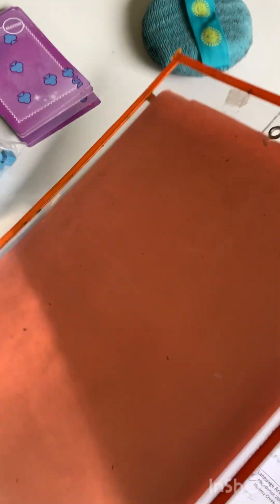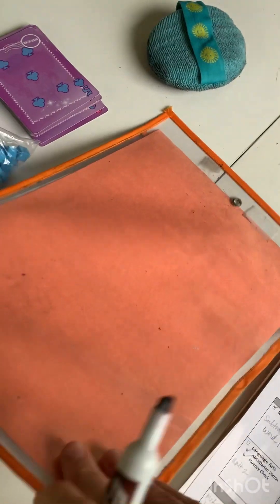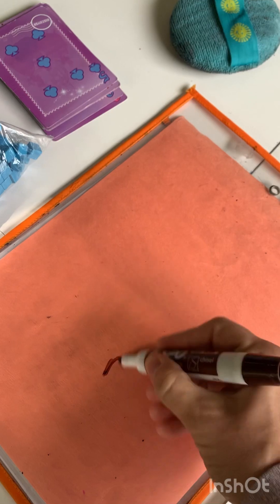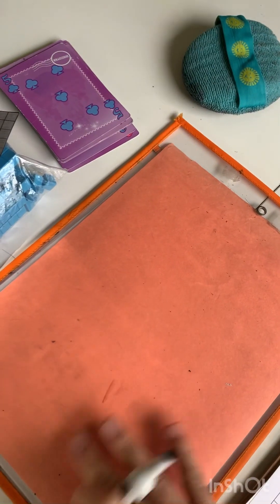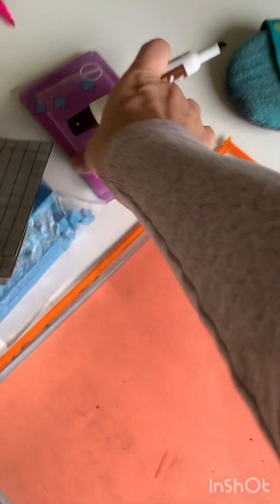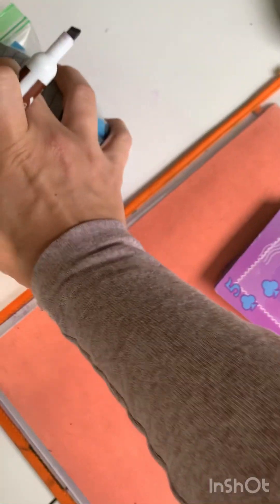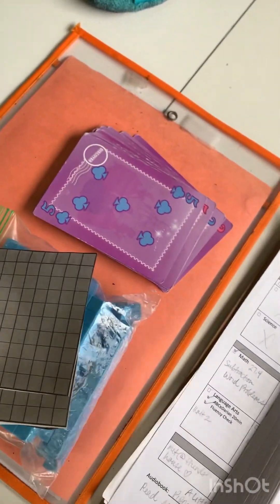The other thing I always have ready for us is this dry erase pocket. We use it as a board. I have a marker ready and some type of eraser that we can use if we need this, so I have this ready as well. All right, so I'm going to set up the chart on the table, and then we'll do the next step.